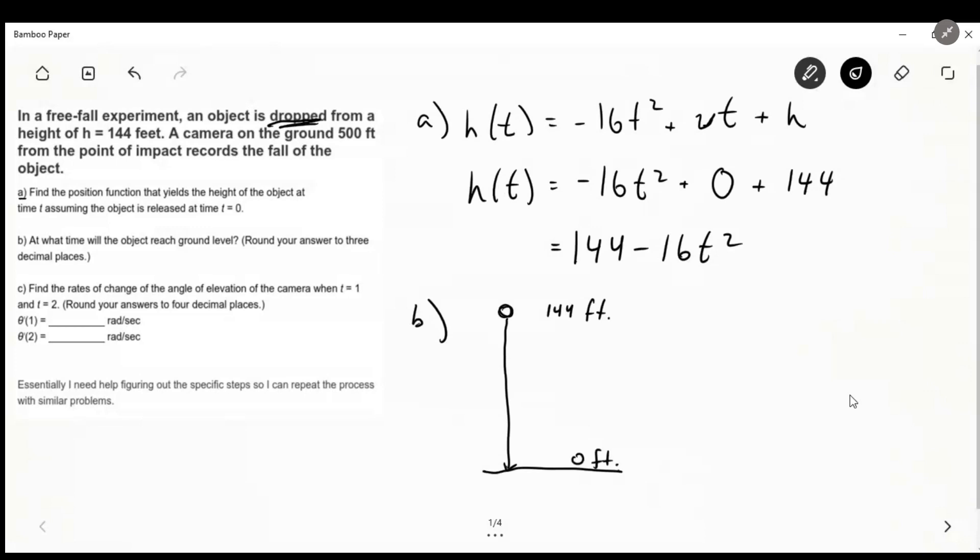Since our equation gives us height, we want to find the time when our height is zero. So let's say zero equals 144 minus 16 t squared. And then you can solve for t. Once you get t equals radical something, instead of saying plus or minus, you can just assume it's the positive answer because you're not going to have a negative time.